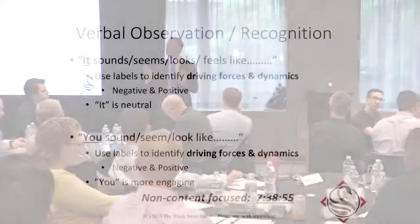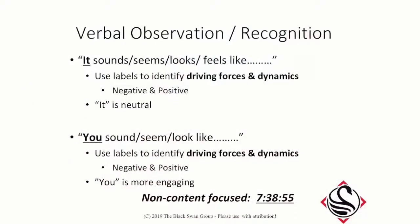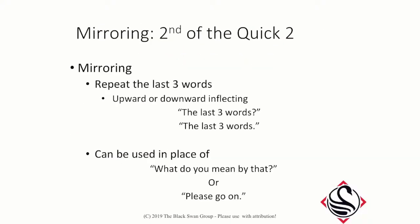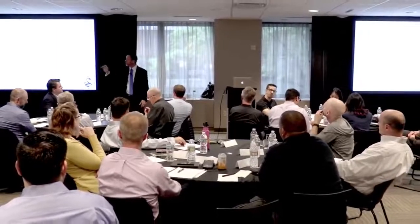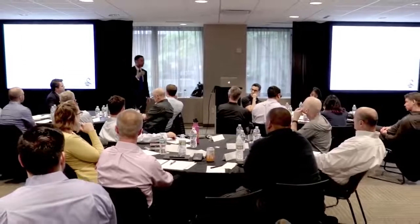I'm going to proceed on the idea that everybody at least understands how to construct a label or mirror. Labels: it seems, it sounds, it looks, you see me sound, you look. A mirror is a repetition of the last one to three words, or a specific selection. Once you get good at the last one to three words, you start picking one to three words out of different portions of the conversation in the mirror.